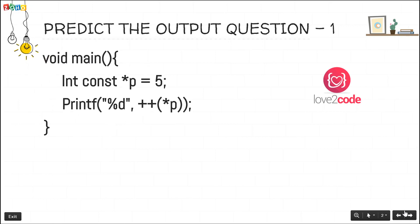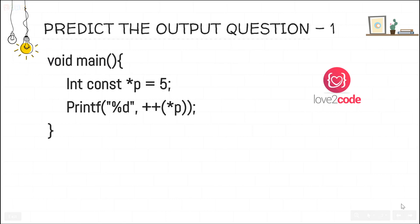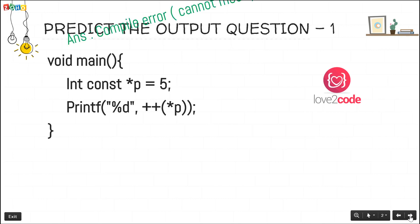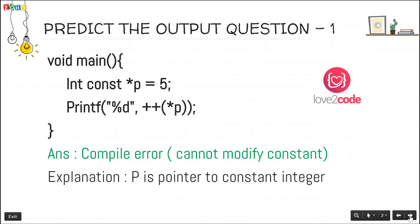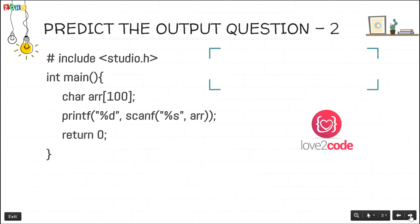The first question gives you a code snippet where you have to predict the output. The main method contains an integer constant pointer p which is initialized to the value 5. After that they are printing it, but before printing they are trying to increment the pointer. The output will be a compilation error — since p is declared as a constant pointer to a constant integer, we cannot modify it, hence it throws a compilation error.